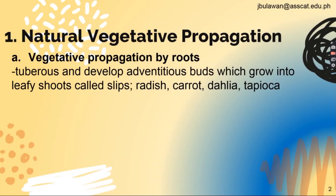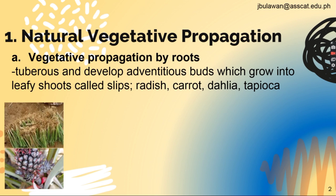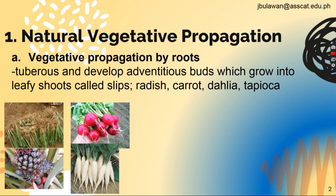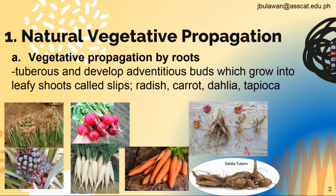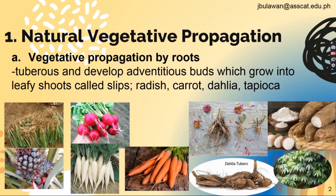First, we have natural vegetative propagation. Letter A: vegetative propagation by roots. Tuberous roots develop adventitious buds which grow into leafy shoots called slips. Examples are radish, beets, carrots, dahlia which has tubers, and tapioca or cassava.